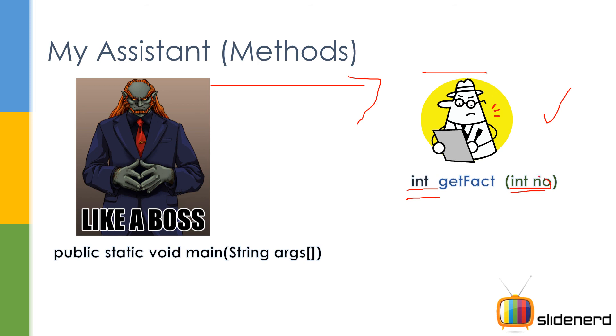This int number is what your boss is going to give your assistant. 5 factorial, 6 factorial, whatever factorial the boss wants, he's going to give this number to your assistant who is called getFact.